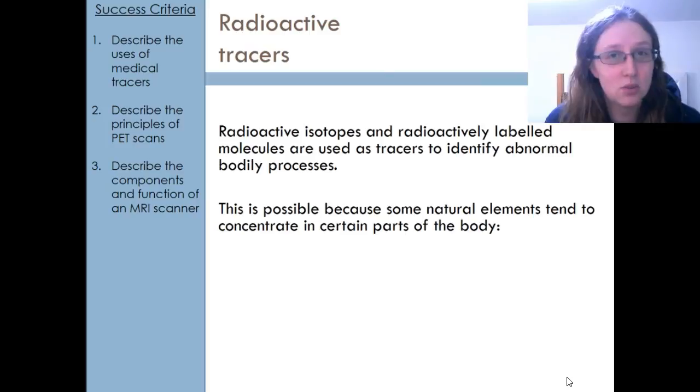And if they congregate in the wrong place or don't congregate where they should, we know that something's wrong. So examples of things that we use are technetium-99m and fluorine-18. Those are the most common radioactive tracers that we use.